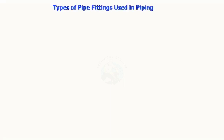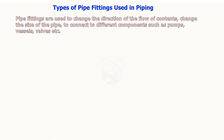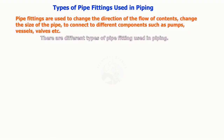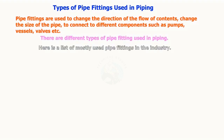Types of pipe fittings used in piping. Pipe fittings are used to change the direction of the flow of contents, change the size of the pipe, and to connect to different components such as pumps, vessels, valves, etc. There are different types of fittings used in piping. Here is a list of mostly used pipe fittings in the industry.